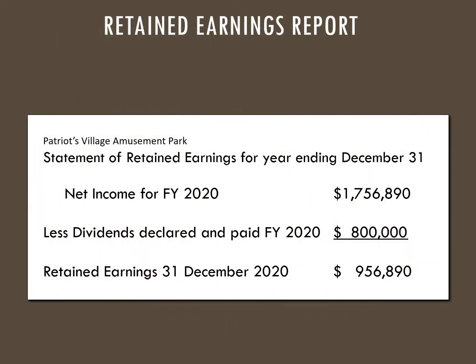Let's look at an example — here we have Patriots Village Amusement Park. The net income for fiscal year 2020 was $1.7 million. The dividends declared and paid for 2020 is $800,000 — things that went out. And we have retained earnings for December 31st, 2020 of $956,890, so overall our retained earnings is almost $1 million.